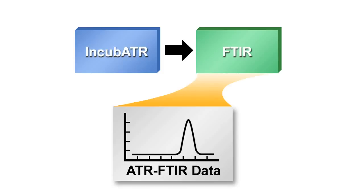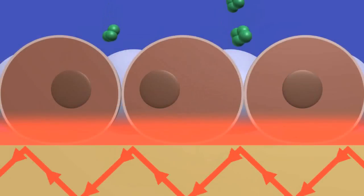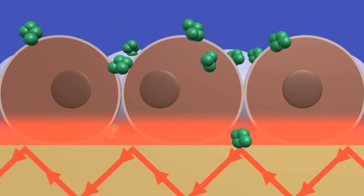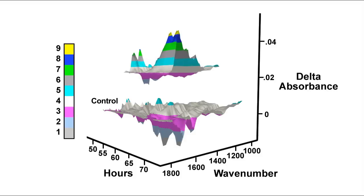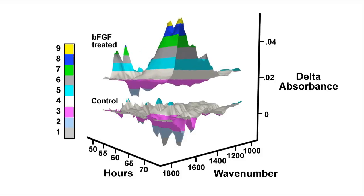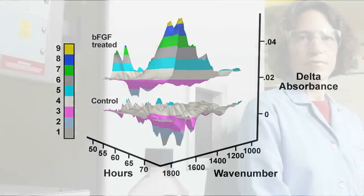For example, in an experiment conducted at PNNL, a stimuli—basic fibroblast growth factor (BFGF), a growth agent and tumor promoter—was added to endothelial model live cells in the incubator's live cell environment, and cellular responses were evaluated.